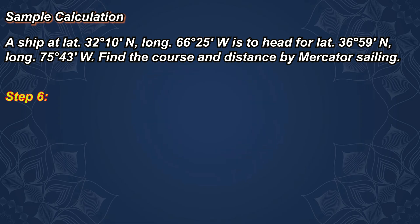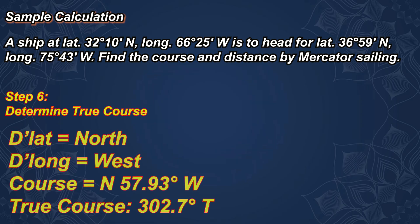Step 6: Determine the true course. The difference of latitude is north and the difference of longitude is west. Therefore, the course is north 57.93 degrees west. Converting to true course gives 302.7 degrees true.